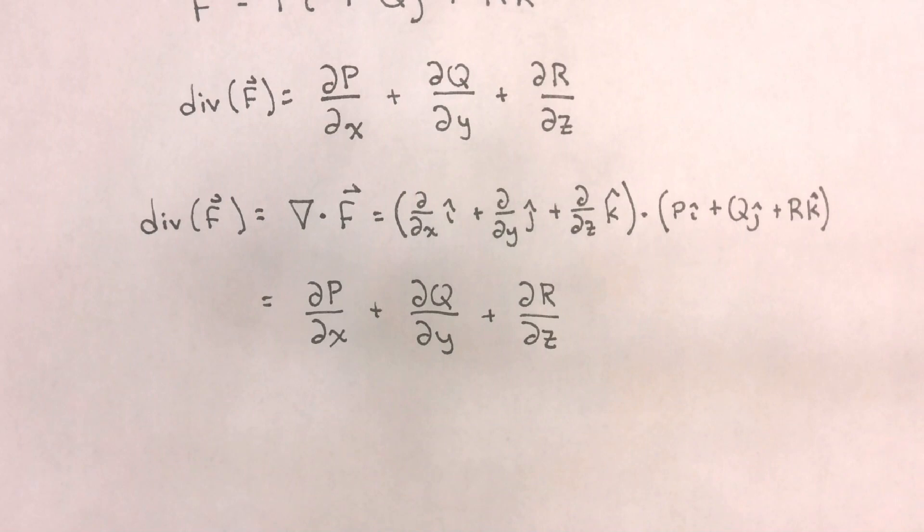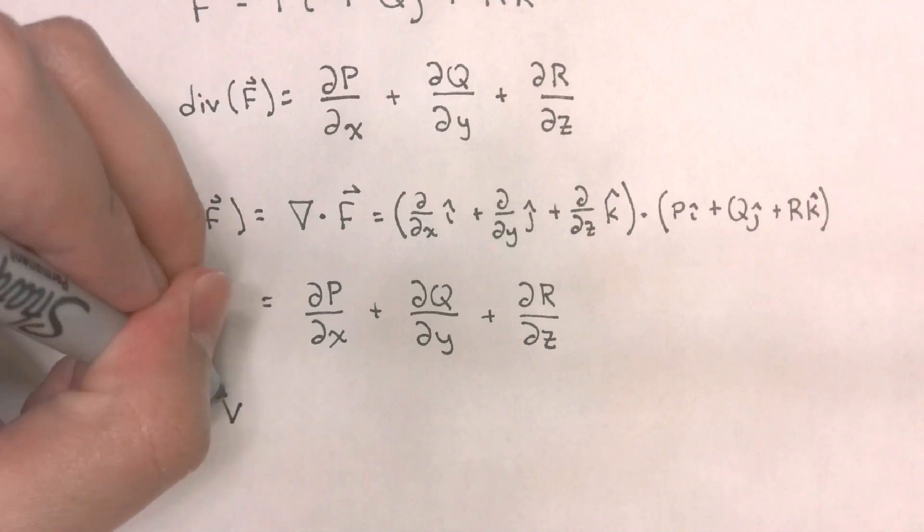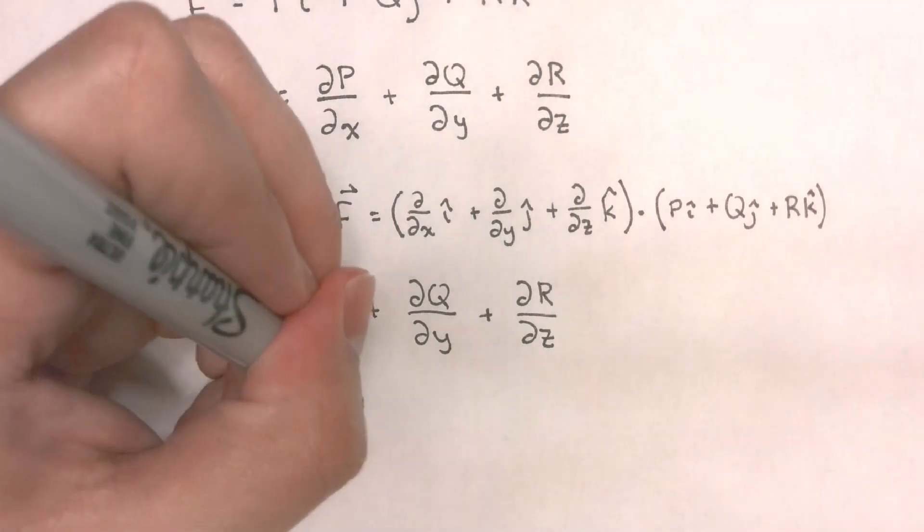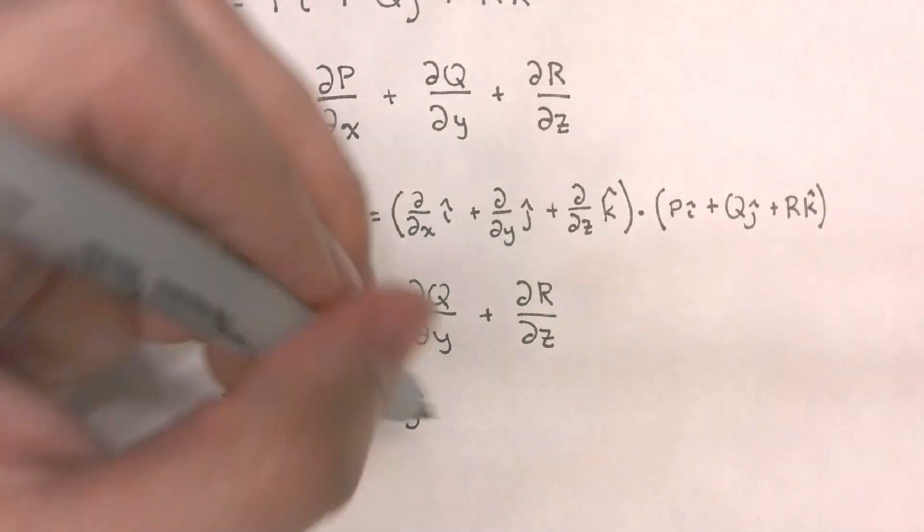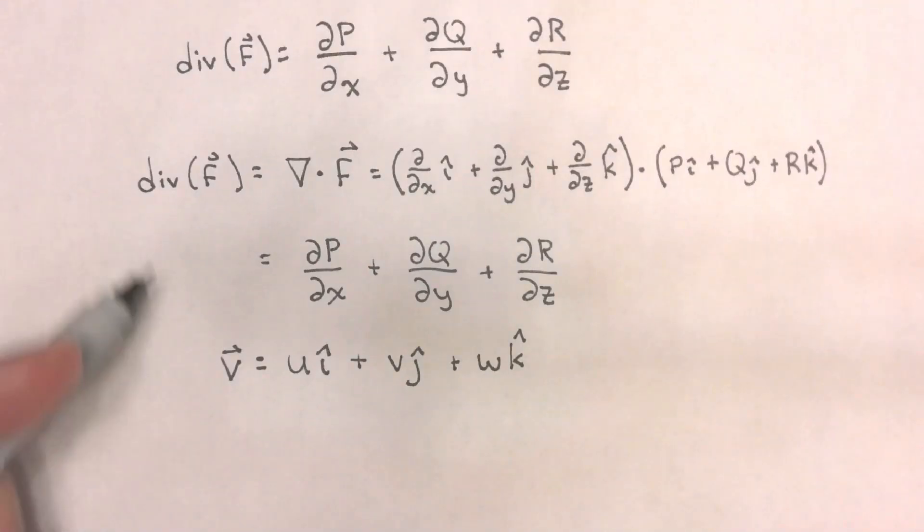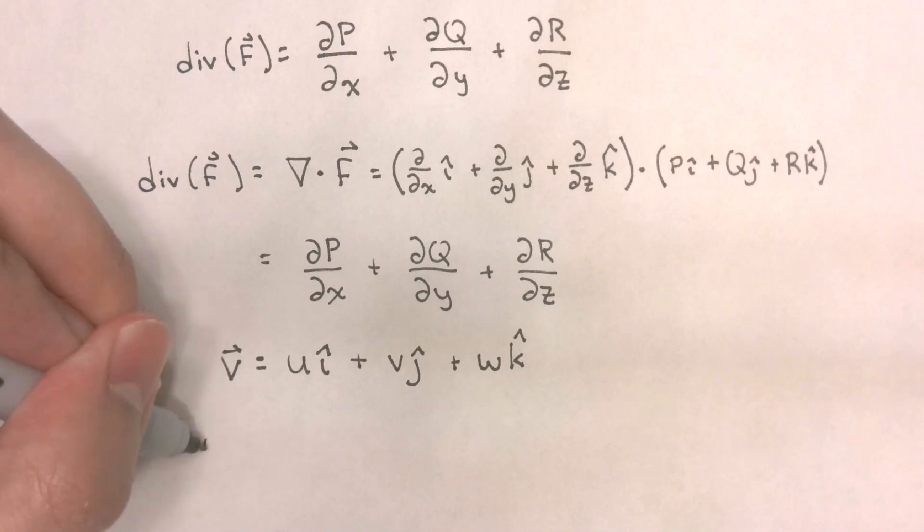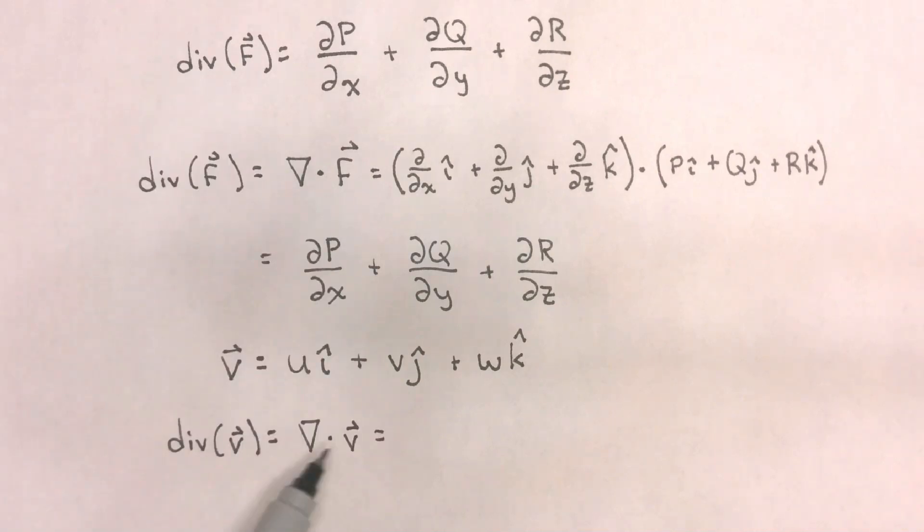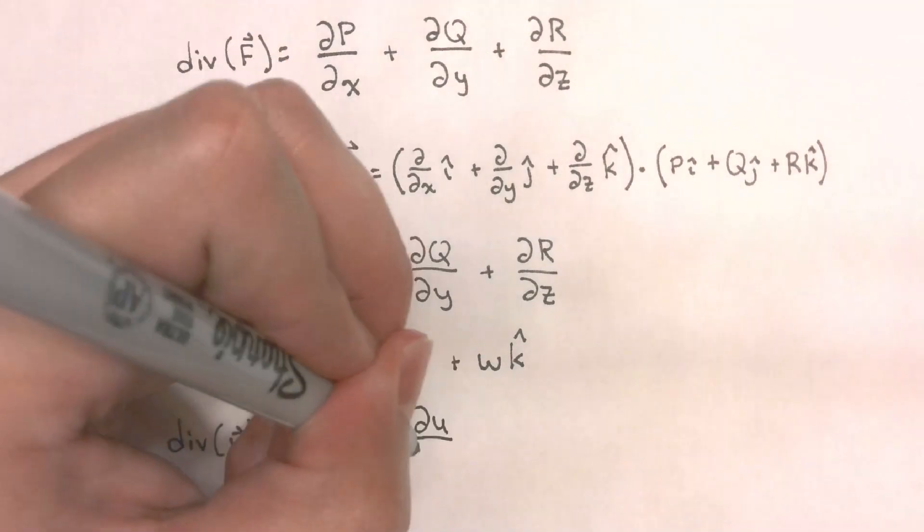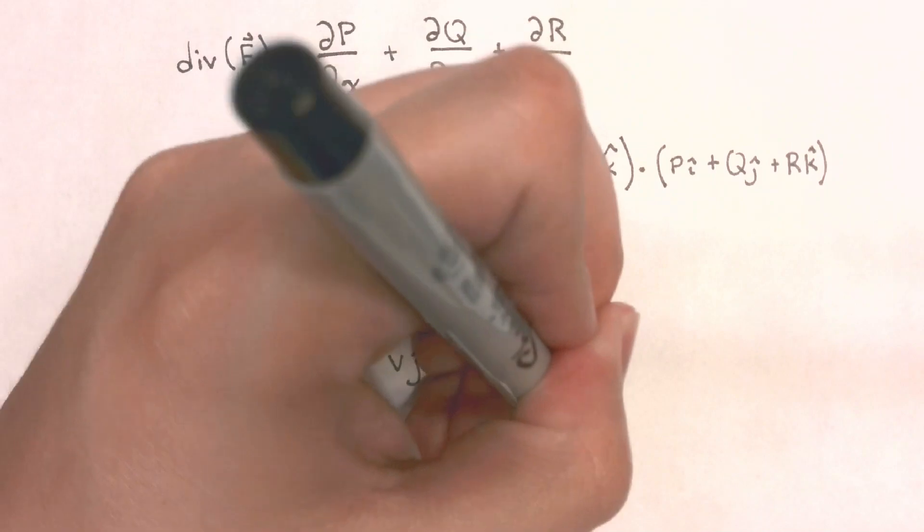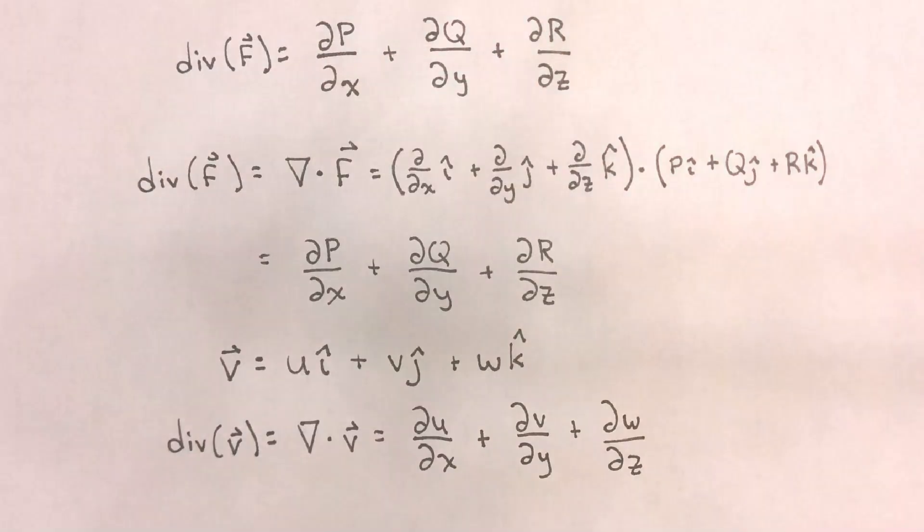Now let's recall the velocity of a fluid in vector form. We've already defined the velocity of a fluid element as the x component u, the y component little v, and the z component w. The divergence of the velocity vector would be divergence of v equals del dot v. Since we already know how to apply the del operator to the velocity field, we would get the partial derivative of u with respect to x, plus the partial derivative of little v with respect to y, plus the partial derivative of w with respect to z.